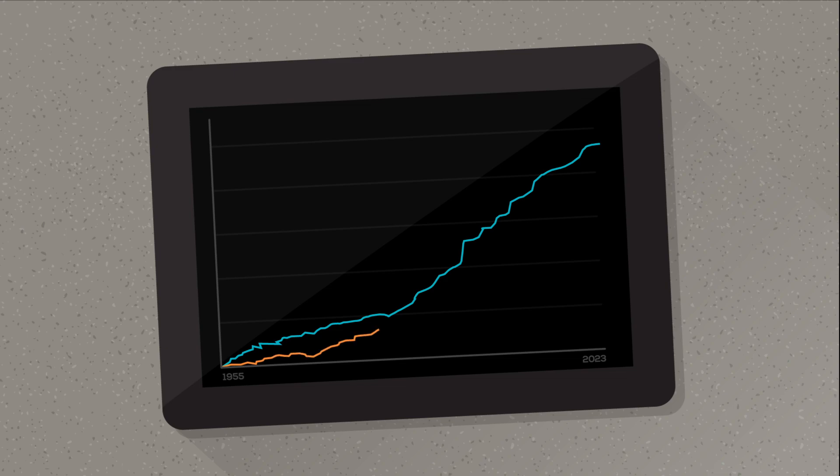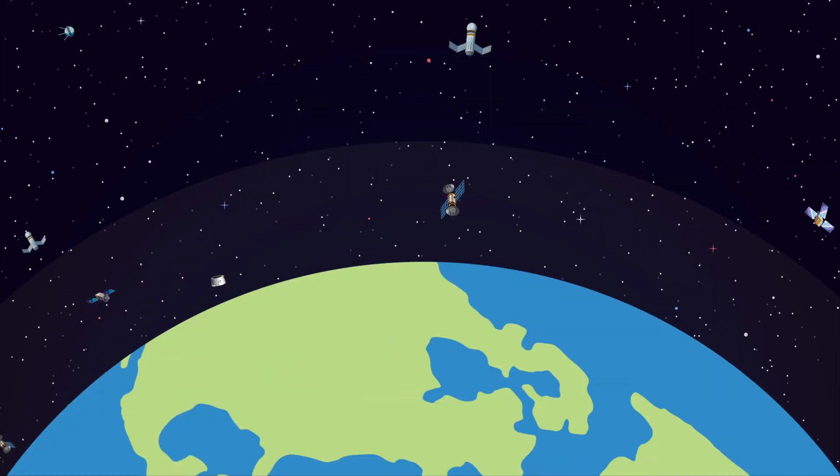In recent years, the activity of commercial space and satellite programs has surpassed that of government and military programs. For instance, Starlink currently has over 3,500 small satellites orbiting the Earth.